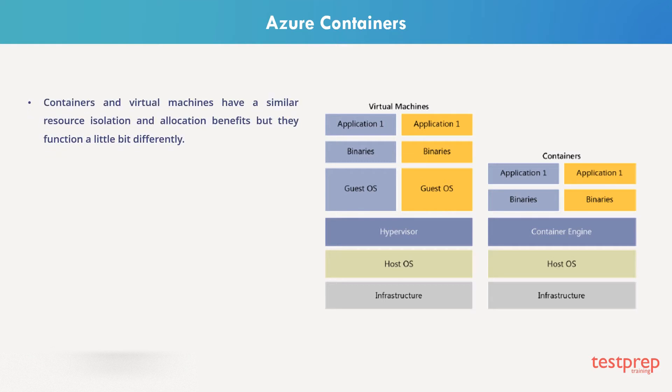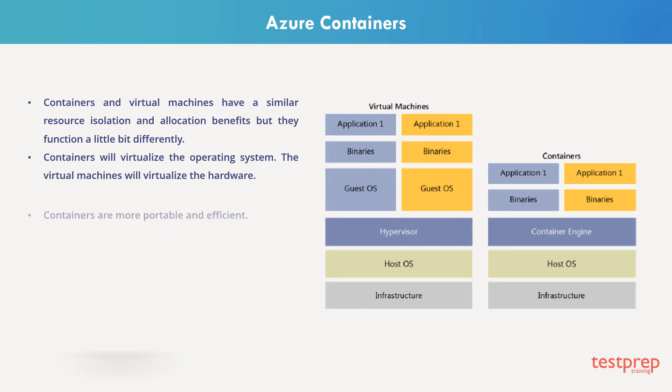Containers and virtual machines have similar resource isolation and allocation benefits, but they function a little bit differently, because containers will virtualize the operating system. Virtual machines will virtualize the hardware. Containers are more portable and efficient. There is a container managing application, or container engine — for example, Docker — which can manage multiple containers.